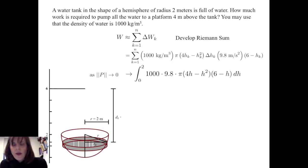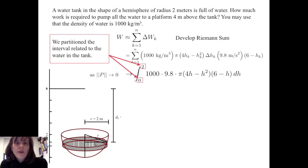We take the limit of the Riemann sum as the norm of the partition goes to zero, and we get the definite integral from zero to two of 1,000 times 9.8 times pi times (4h minus h squared) times (6 minus h) dh. The limits of integration, zero and two, are the endpoints of the interval we partitioned, specifically related to the water in the tank.